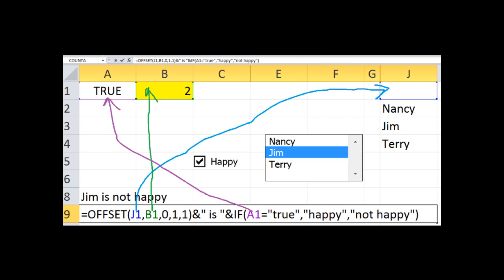The fourth criteria is for enlarging or making smaller the height of the cell. We don't want that. We want to stay at the default. The default for the height is 1. The default for width is also 1. So 4 and 5 is going to be a 1. We should have equal OFFSET comma J1 comma B1 comma 0 comma 1 comma 1, close parentheses.